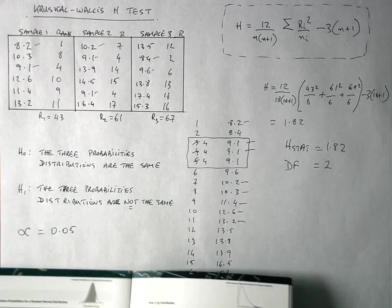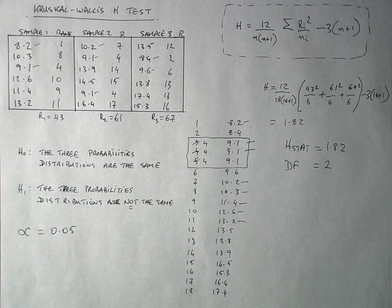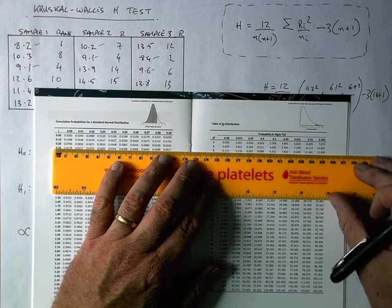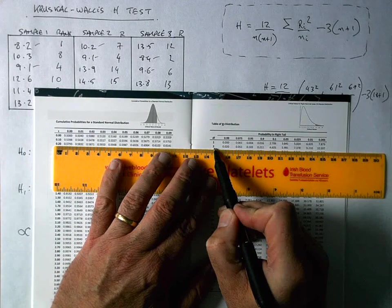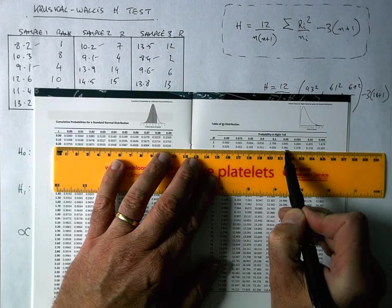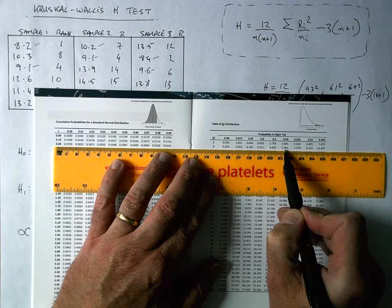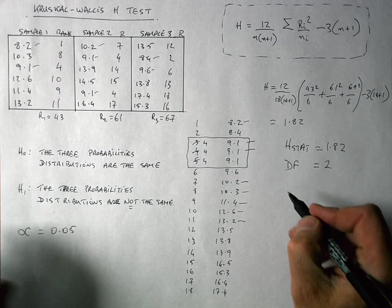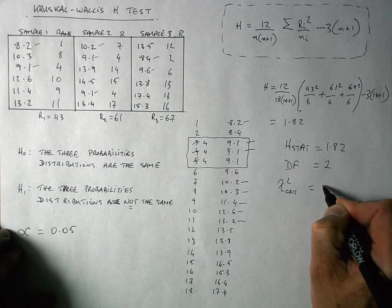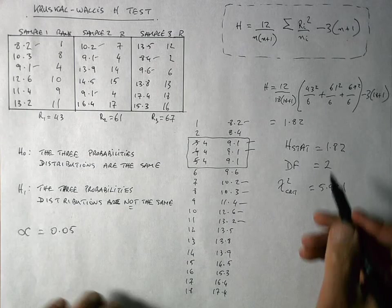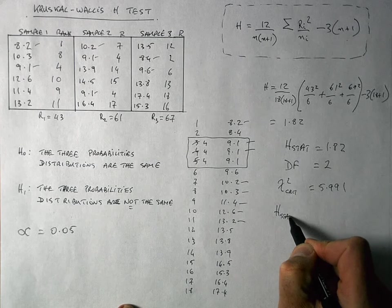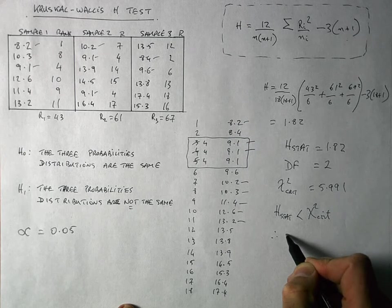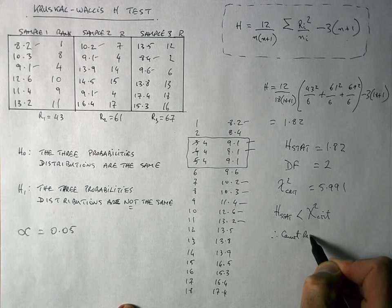This allows me then to take a look and find the critical value for this. And the Kruskal-Wallis stat here follows a chi-squared distribution. So I'm going to use my chi-squared tables here and look across the degrees of freedom column here. So I've got two degrees of freedom to look across that. And I'm testing at an alpha value of 0.05. So my chi-squared critical value in this instance here, it has a value of 5.991. So my chi-squared Kruskal is equal to 5.991. I can see in this case here that my H stat is less than my chi-squared critical value.